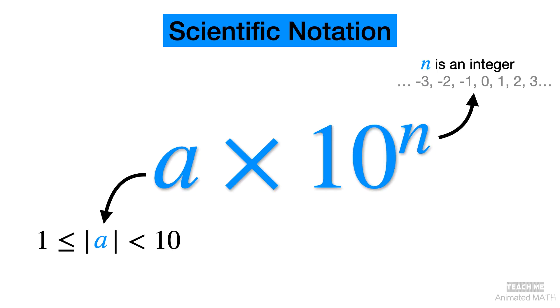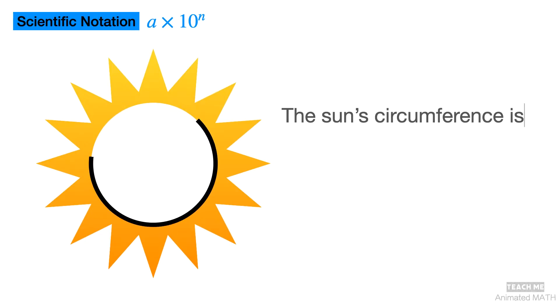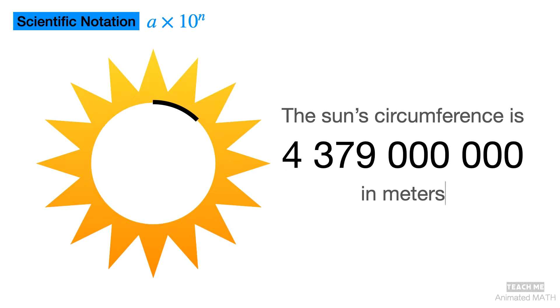Let's look at some real-life examples that use scientific notation. Here is an object much bigger than the Earth. Based on Google, the circumference of the Sun is this big number. So how do you convert this number into scientific notation?